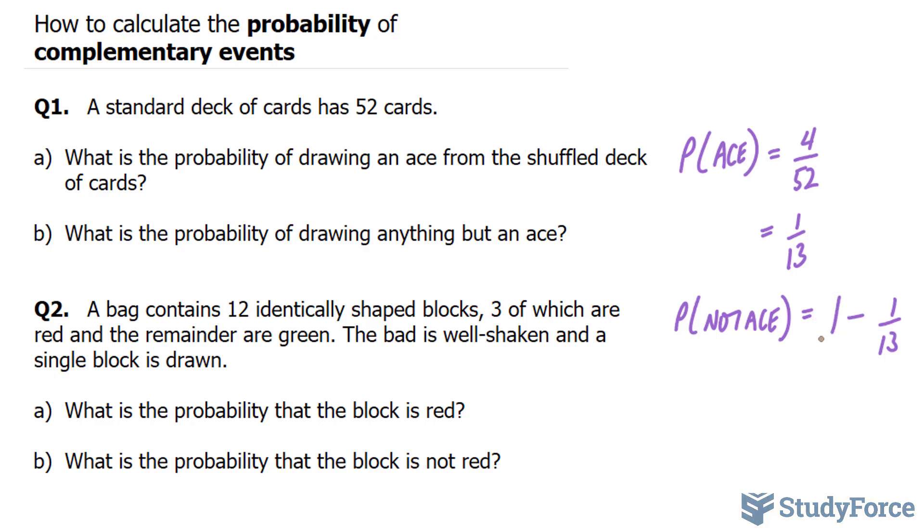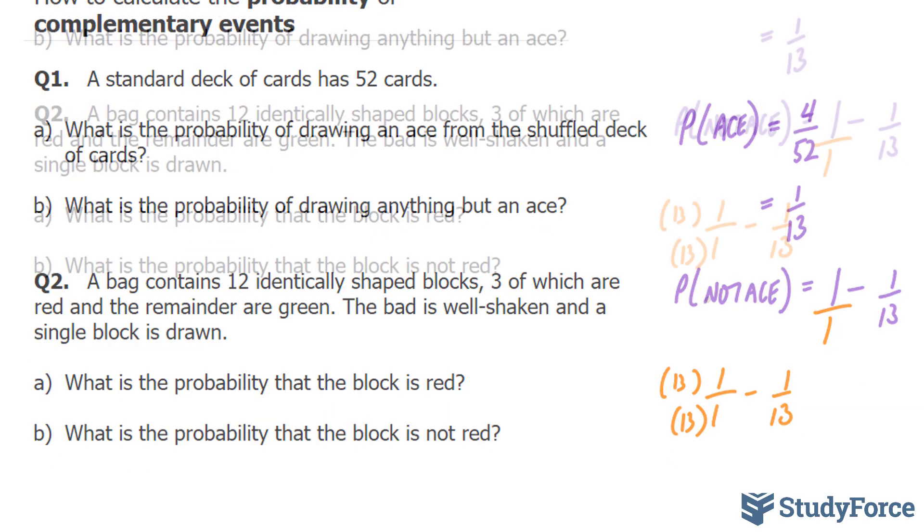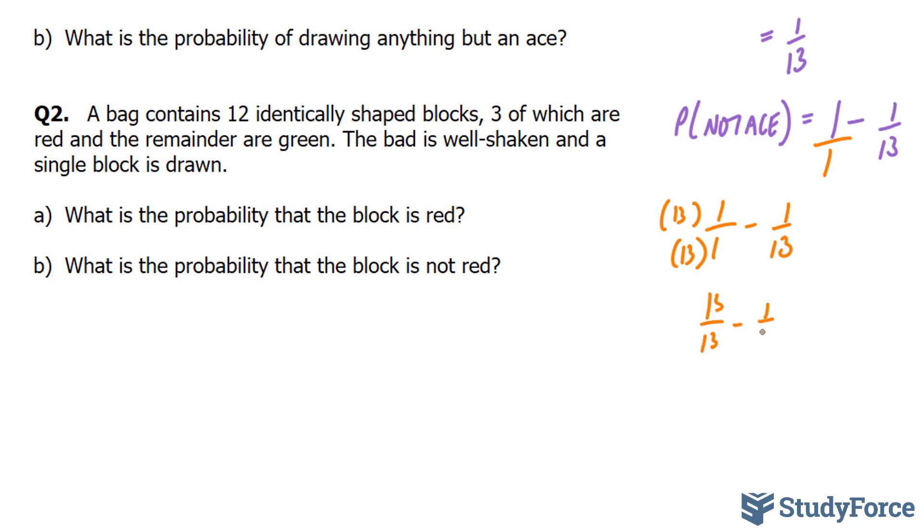Now you'll notice that this 1 is the same thing as saying 1 over 1, so we have 1 over 1 minus 1 over 13. We need to find a common denominator. We need to somehow make this 1 into a 13. That can be done by multiplying the denominator and numerator by 13, which leads us to 13 over 13 minus 1 over 13. Now that the denominators are the same, you can subtract the numerators, and we end up with 12 over 13.